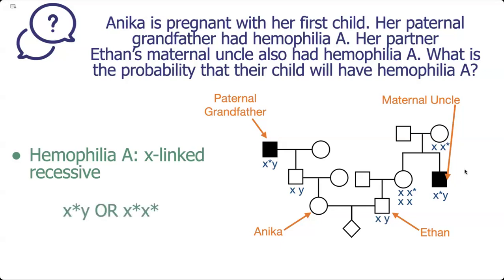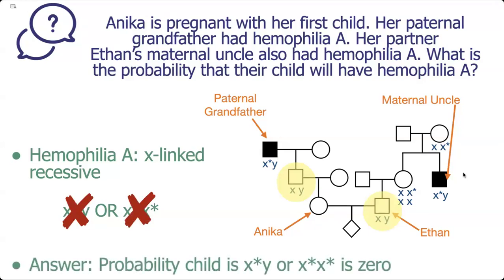Now, in order for the child to have hemophilia, it has to have one of two genotypes: an X with the hemophilia mutation and a Y, or two X's with the hemophilia mutation — because hemophilia A is X-linked recessive. But when we look at these two individuals, the hemophilia A mutation hasn't been passed through these pedigrees, so there's no way the child could have either of those two genotypes. The answer to this question is zero.